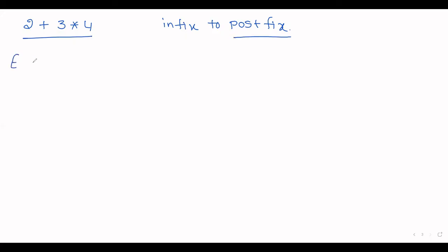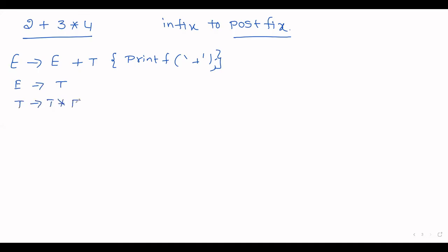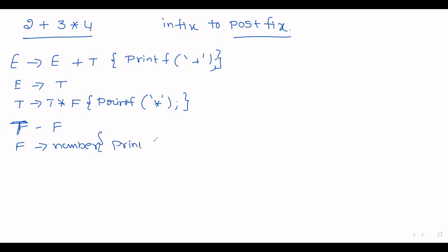A grammar is given. E tends to E plus T — within flower brackets, whatever is written are called semantic rules, for example: printf plus. E tends to T. T tends to T star F — semantic rule: printf star. T tends to F. F tends to some number — semantic rule: print num dot value. This is the given grammar.